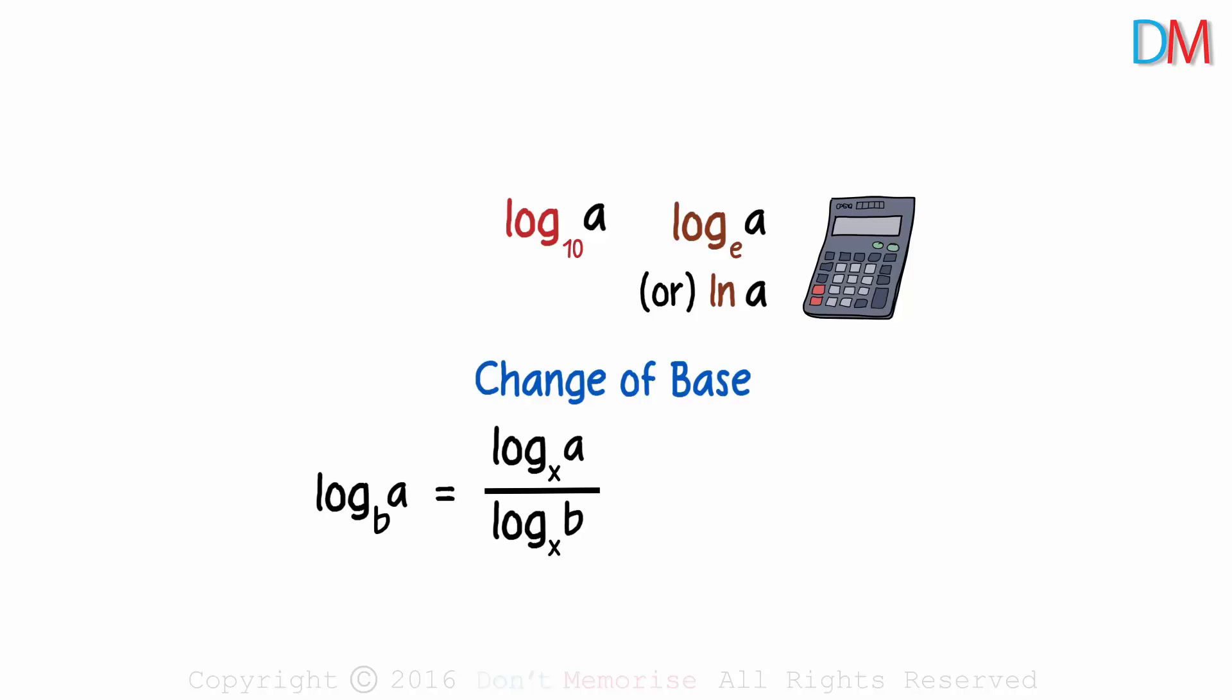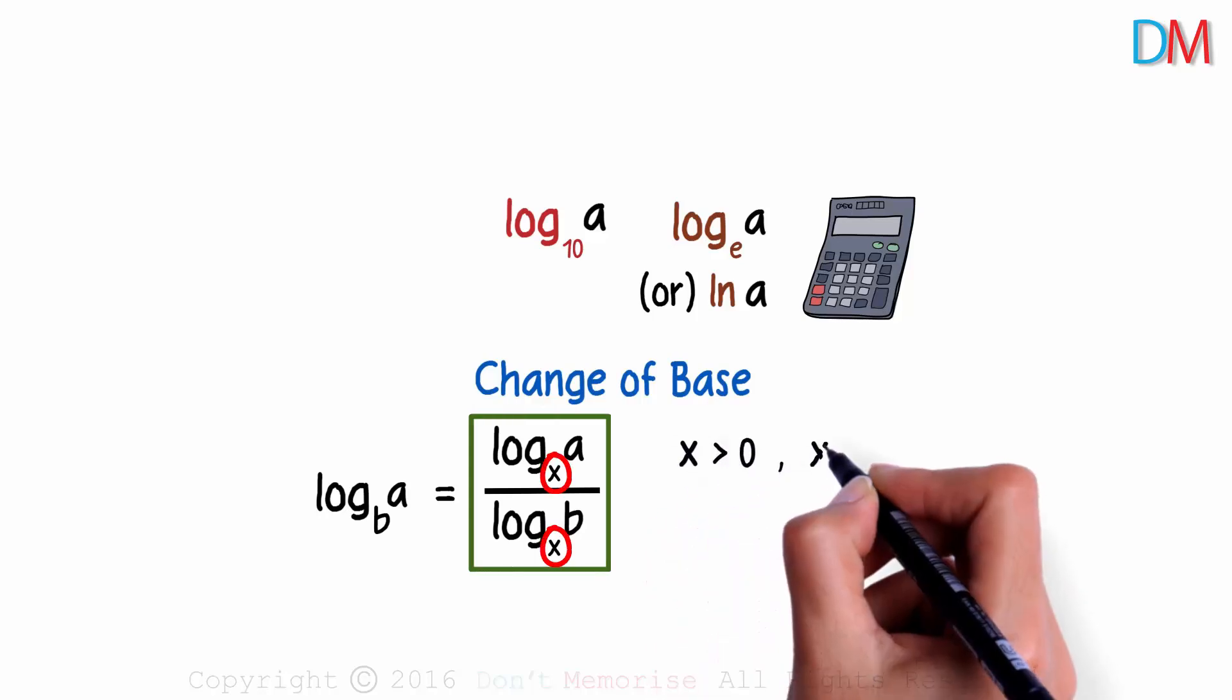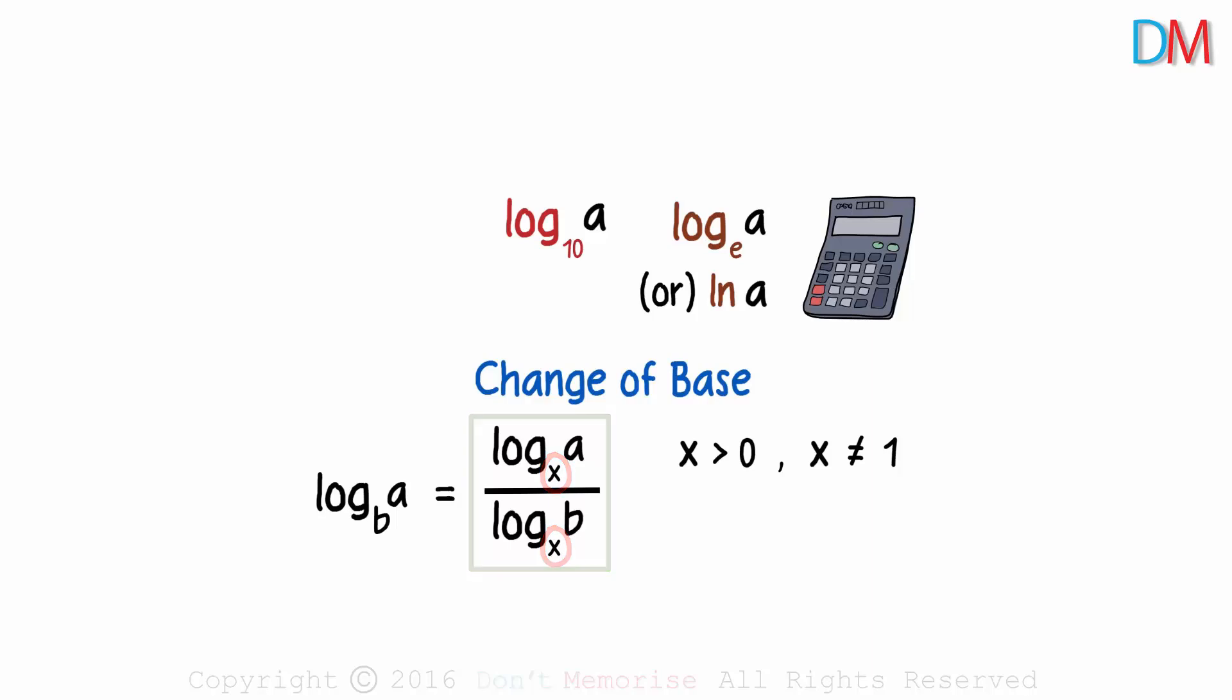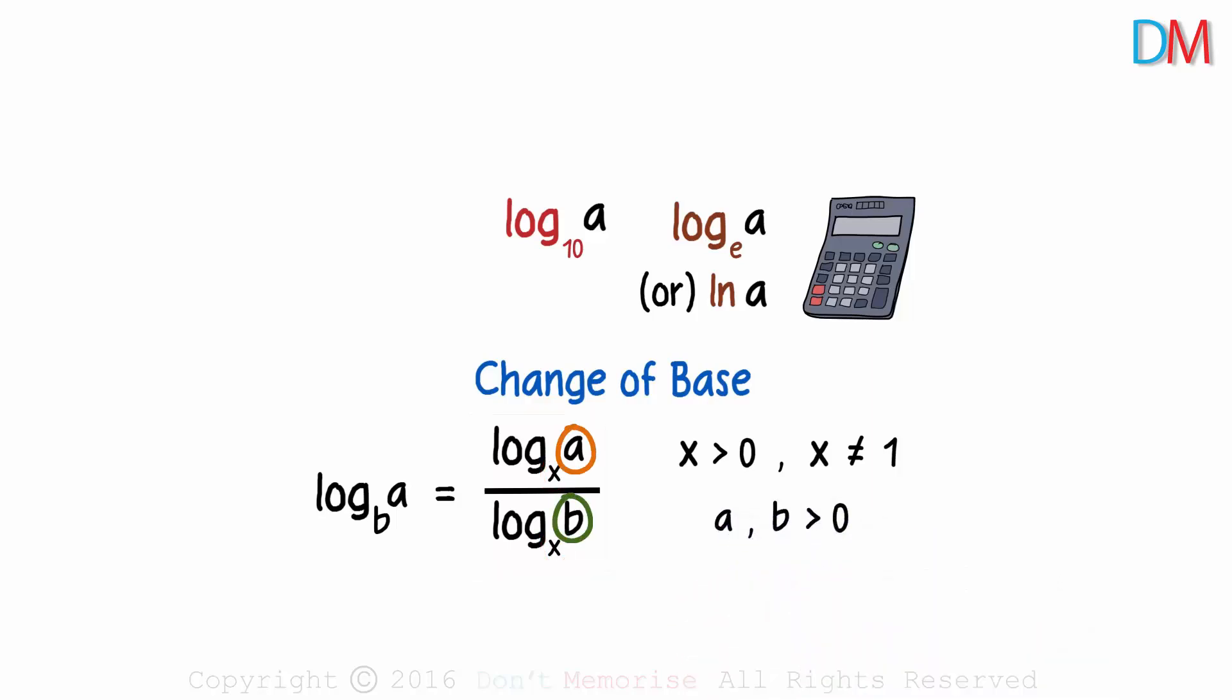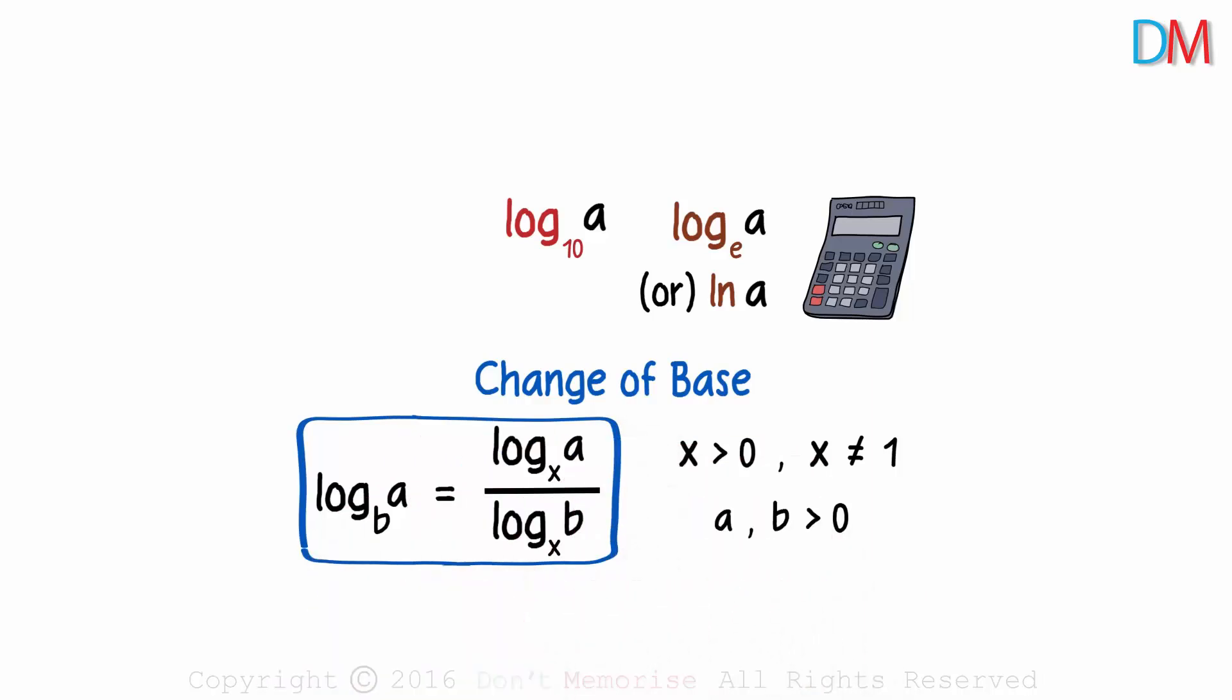Of course, the normal conditions about the base and the argument will still exist. The base, or in this case X, will be greater than 0 and X will not be equal to 1. And the arguments A and B will be greater than 0. This is the change of base formula.